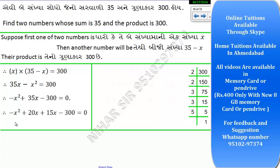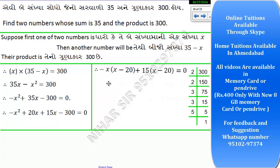Now factoring by grouping: take minus x common from the first two terms to get minus x into (x minus 20). From the remaining terms, divide by the first term of the bracket — 15 becomes common, giving plus 15 into (x minus 20). So we have (x minus 20)(minus x plus 15) equals zero.